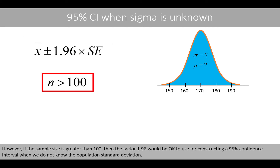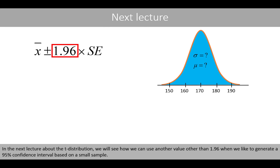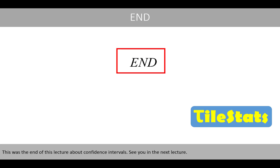However, if the sample size is greater than 100, then the factor 1.96 would be okay to use for constructing a 95% confidence interval when we do not know the population standard deviation. In the next lecture about the t-distribution, we'll see how we can use another value other than 1.96 when we like to generate a 95% confidence interval based on a small sample. This was the end of this lecture about confidence intervals. See you in the next lecture.